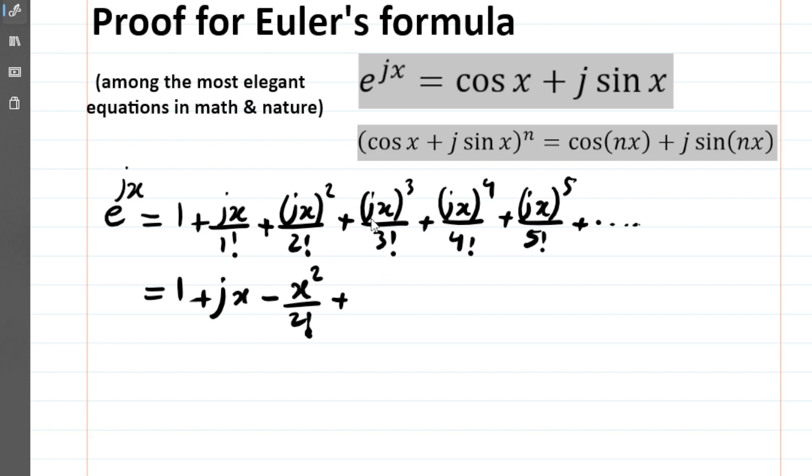Then we have j^3, which means j^2 times j, and that translates to -j.